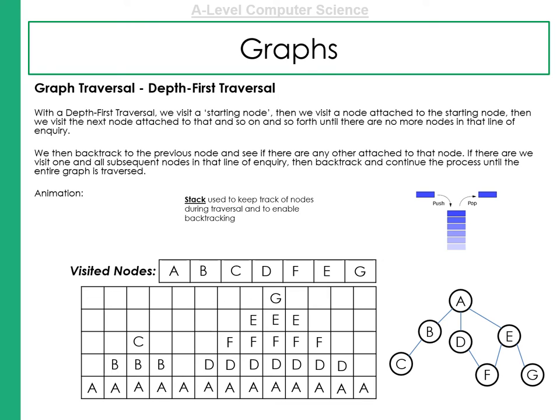So E gets placed onto the stack. Now, because E has visited already A, D and F, we've already found those. All we need to do is visit G. G's put on the stack. G doesn't have any child nodes, so it removes itself from the stack.